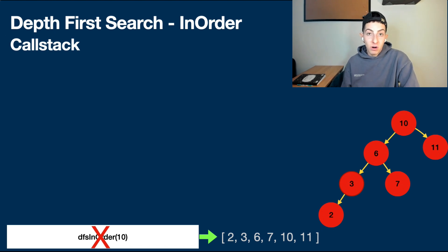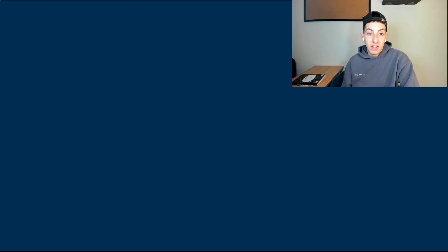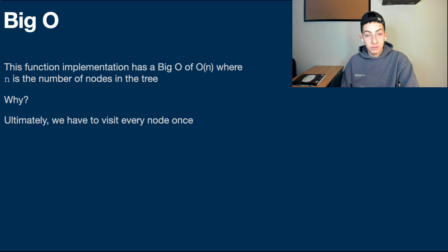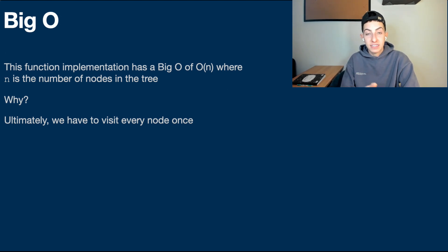Let's talk about the Big O of this function. This implementation has a time complexity of O(n), where n is the number of nodes in the tree. We have to visit every node once. Many search algorithms on BSTs give you O(log n) because you can halve the nodes you look through based on whether values are less than or greater than the current node — but in this case we must traverse the entire tree, so it is O(n).